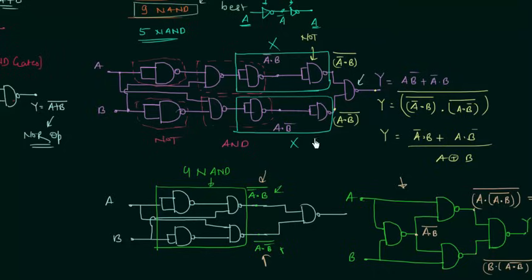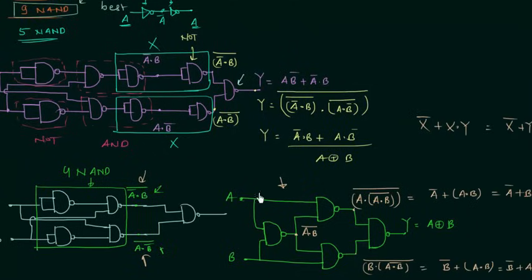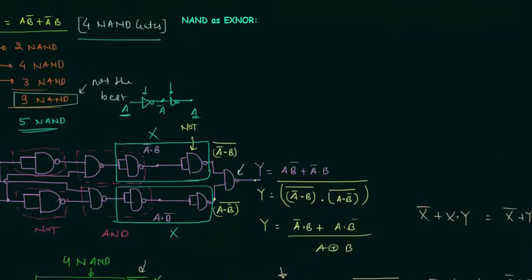We started from a circuit with 9 NAND gates, then reduced to a circuit with 5 NAND gates, and finally arrived at this circuit with 4 NAND gates. This is the most efficient implementation. Please draw it somewhere so you can revise it before your exam.